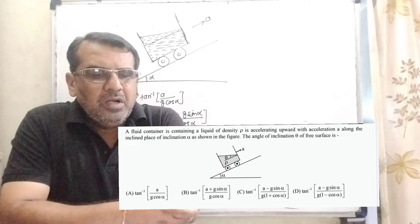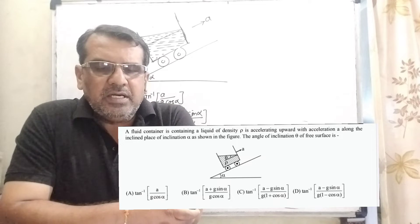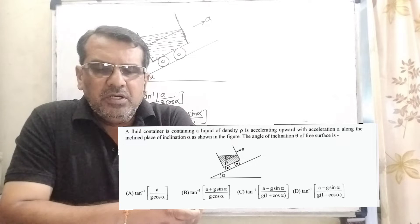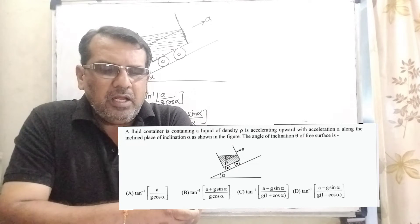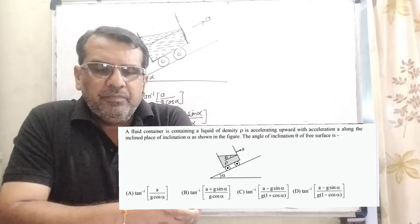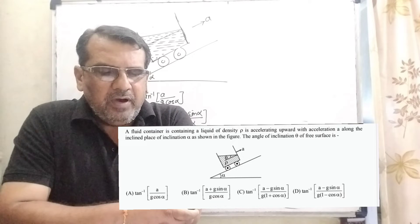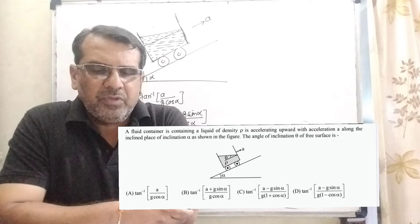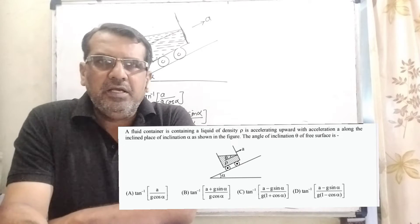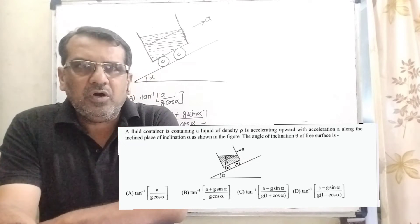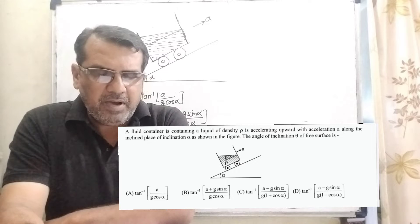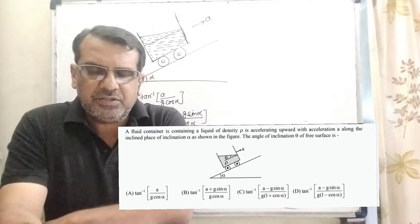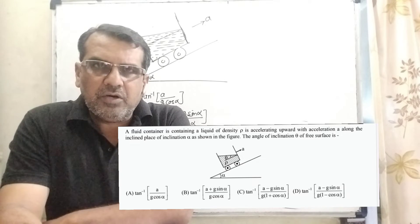Here is the question. A fluid container containing a liquid of density rho is accelerating upward with acceleration a along an inclined plane of inclination alpha, as shown in the figure. The angle of inclination theta of the free surface is to be found. Option A: tan inverse of a by g cos alpha. Option B: tan inverse of (a plus g sin alpha) upon g cos alpha.